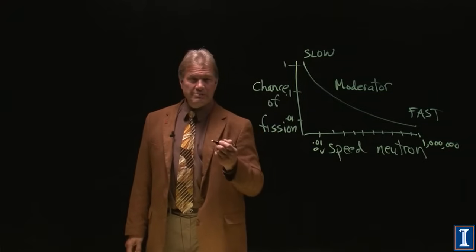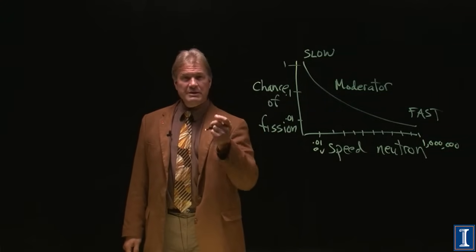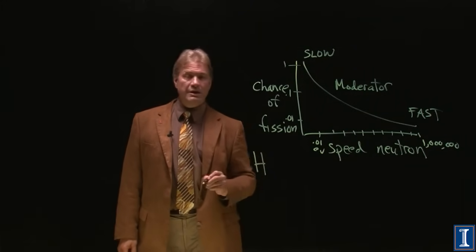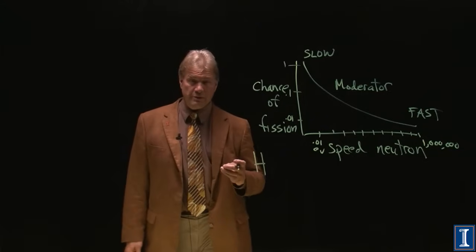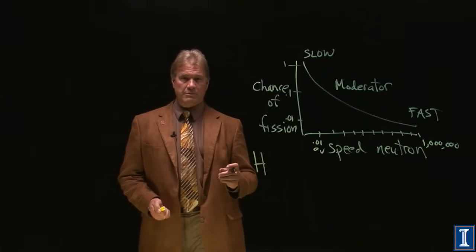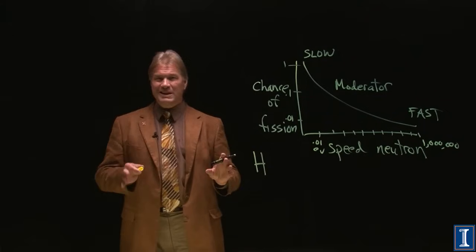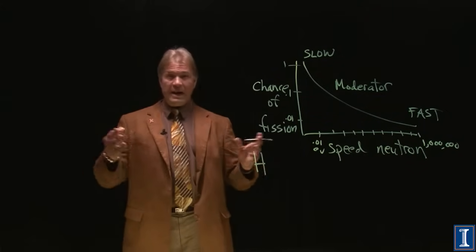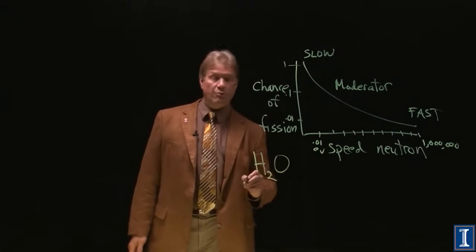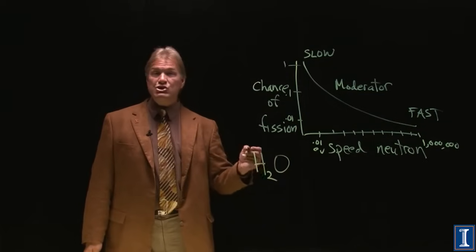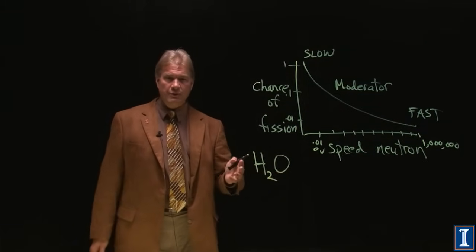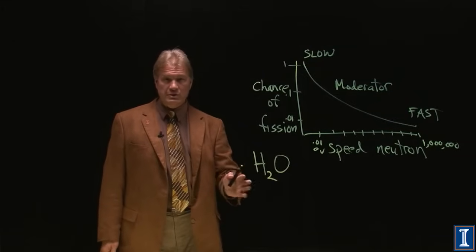What does a moderator need to be? It needs to be something similar to the mass of a neutron. So one of the very best ones is the element hydrogen. It's got one proton in the nucleus, about the same mass as one neutron. They bounce into each other. They slow down. You can't put hydrogen gas there. One, it's explosive, and two, it's a gas. It's not going to hit very many things in a gas. But if you make this into water, and you simply have H2O, water, as your moderator, you've got a wonderfully useful and good neutron slower.